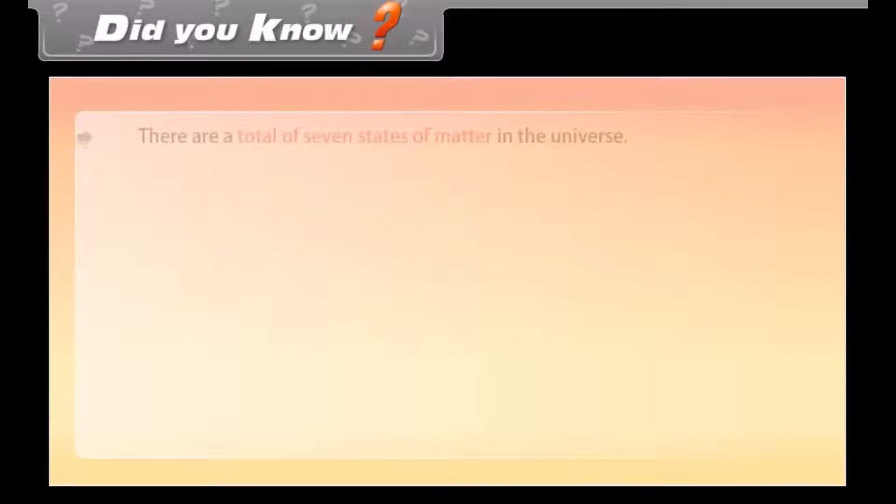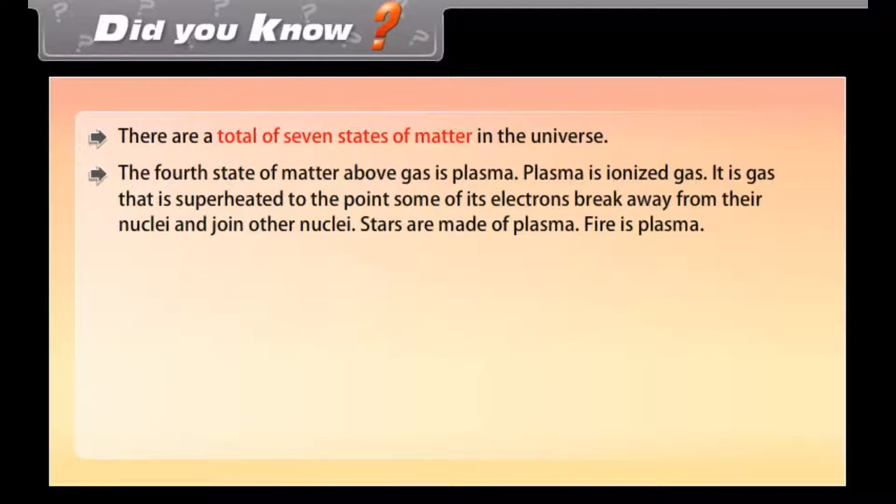Did you know? There are a total of seven states of matter in the universe. The fourth state of matter above gas is plasma. Plasma is ionized gas. It is gas that is superheated to the point some of its electrons break away from their nuclei and join other nuclei. Stars are made of plasma. Fire is plasma.